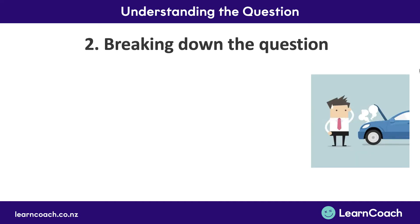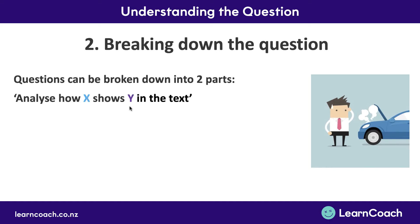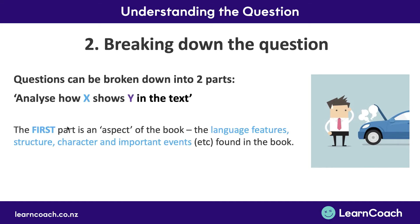Now let's go on to breaking down the questions structurally. Questions can be broken down into two parts, and broadly there's the same formula for every question: 'analyse how X shows Y in the text.' We're going to call X part 1 and Y part 2. The first part, X, is an aspect of the actual book — something like the language features, structure, character, and important events found in the book — and in a question it would just be one of these.